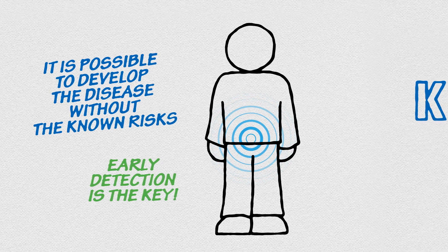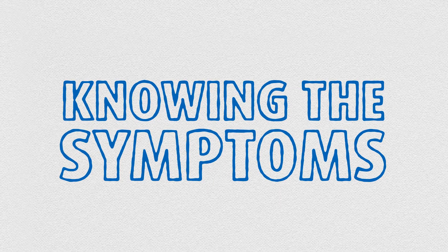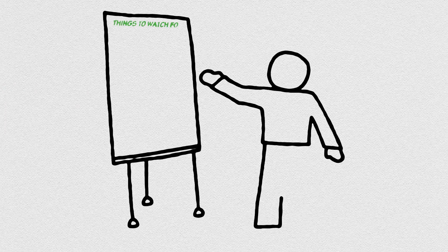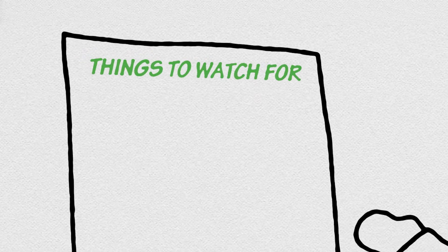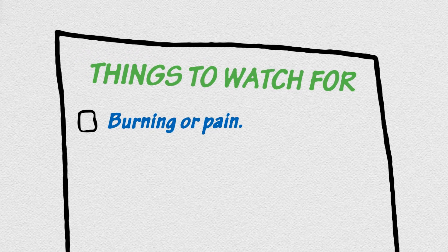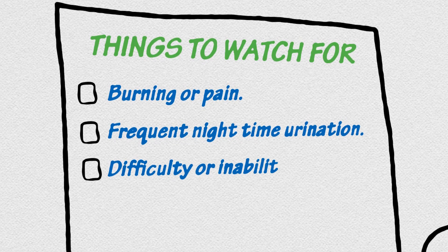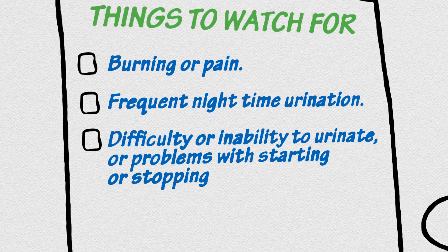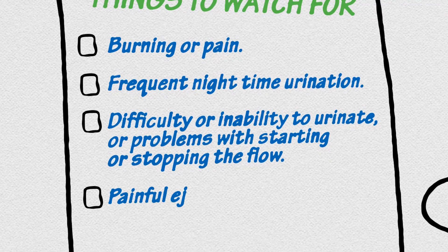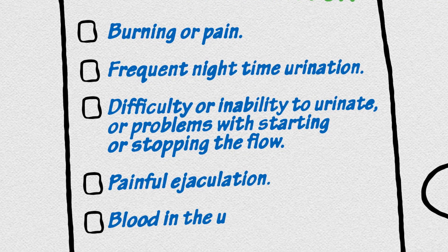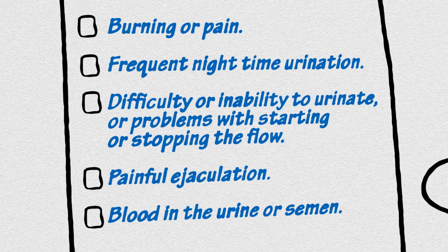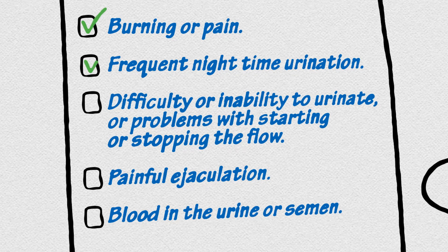Early detection is the key. But do you know the warning signs? Things to watch for include problems with urination, such as burning or pain, frequent nighttime urination, difficulty or inability to urinate, or problems with starting or stopping the flow, painful ejaculation, blood in the urine or semen. You have to remember, however, that these symptoms aren't always there, especially in the early stages.